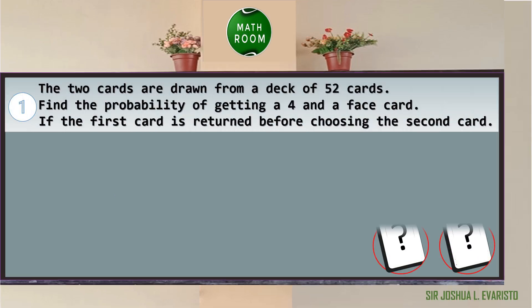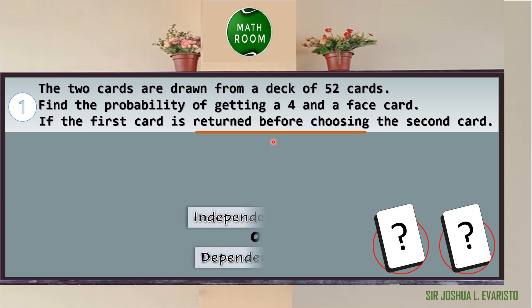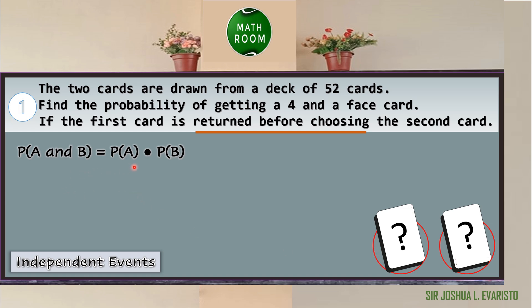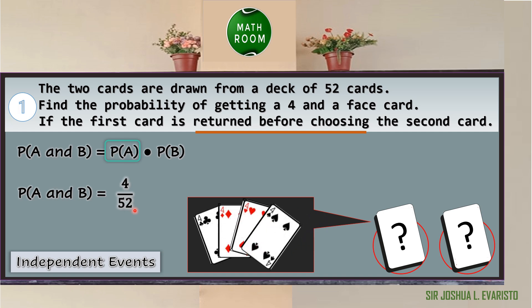Example number one: Two cards are drawn from a deck of 52 cards. Find the probability of getting a four and a face card if the first card is returned before choosing the second card. This is an example of independent events because there is a replacement, so the outcome of one event has no effect on the outcome of the second event. We use the formula P(A and B) = P(A) × P(B). The probability of A, getting a four, is 4 over 52.